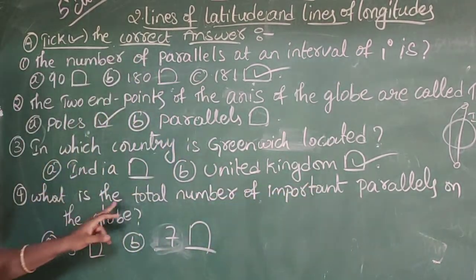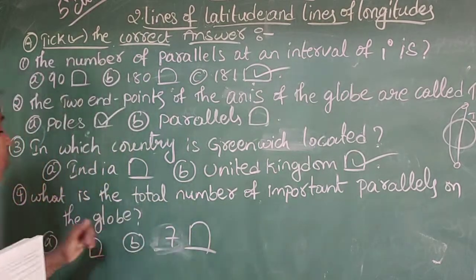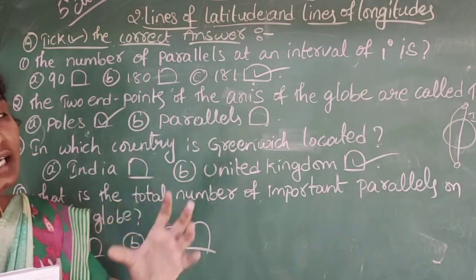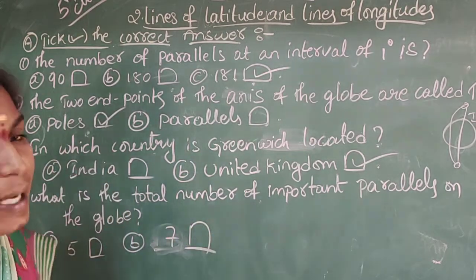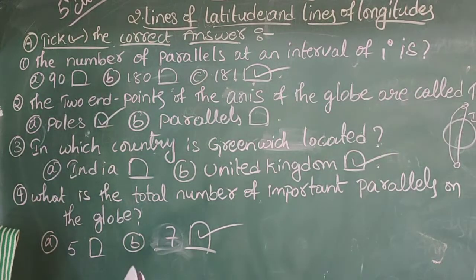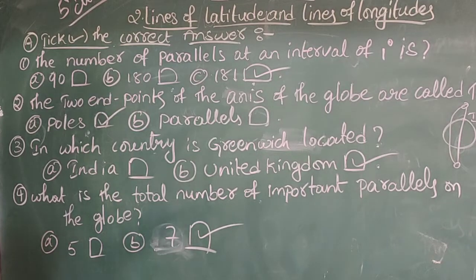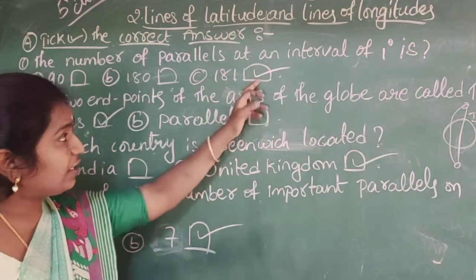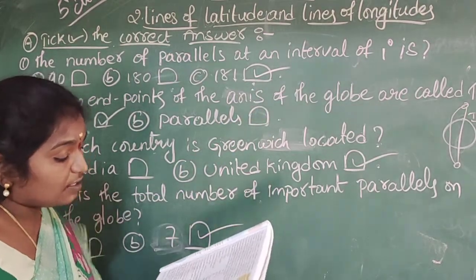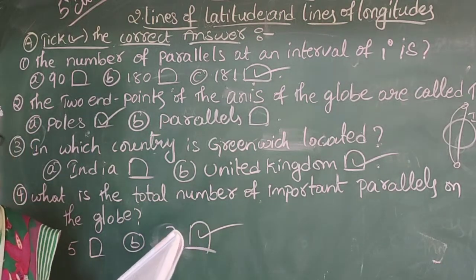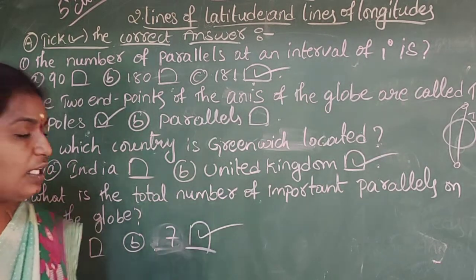Next question: What is the total number of important parallels on the globe? Parallels means lines of latitude. We have 181 parallel lines in total, but how many are important? 7 important parallel lines are there. So the answer is 7.